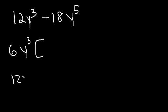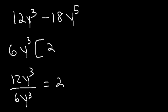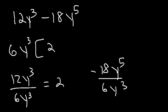Now, 12y³ divided by 6y³ is simply 2 — the y variables cancel because 3 minus 3 is 0, and y to the 0 is 1. Negative 18y⁵ divided by 6y³: negative 18 divided by 6 is negative 3, and 5 minus 3 is 2, so this is negative 3y². So the factored form is 6y³ times (2 minus 3y²).